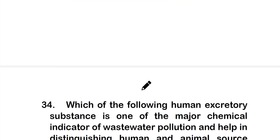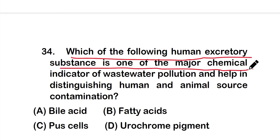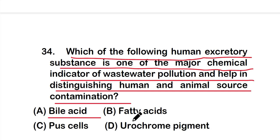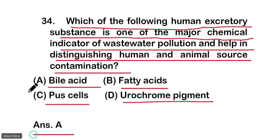Question number 34: Which of the following human excretory substances is one of the major chemical indicators of wastewater pollution and health in distinguishing human and animal source contamination? Options: A) bile acids, B) fatty acids, C) pus cells, or D) urothelium pigment. The right answer is option A — bile acids. Bile acid is a human excretory substance that serves as a major chemical indicator of wastewater pollution.